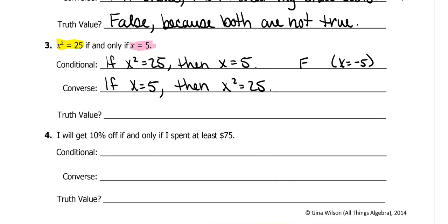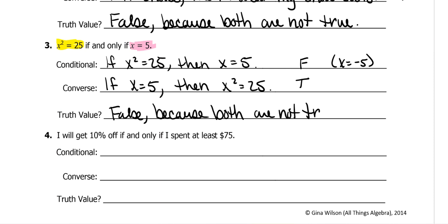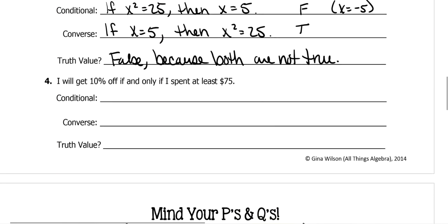For the converse: if x equals 5, then x squared equals 25 — that's true, because if we already know x is 5, then when you square it, it of course equals 25. But the biconditional is false again, because both are not true — x could be negative 5 as well.